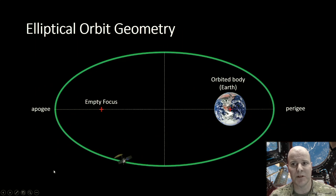So to begin with, let's look at an elliptical orbit of a satellite around the Earth. An ellipse has two foci, and at one of these foci you will find the Earth, or the orbited body, and at the other is simply going to be empty.